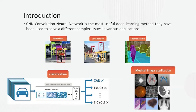CNN — Convolutional Neural Network — is the most useful deep learning method and one of the different types of neural networks. CNNs have been used to solve different complex issues in various applications, including object detection in images and videos, localization, object segmentation, and classification, as shown in the figure.